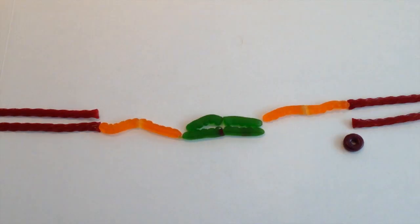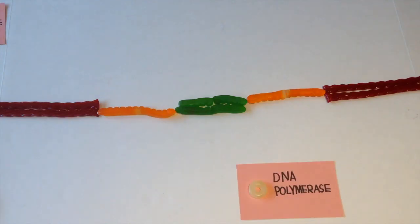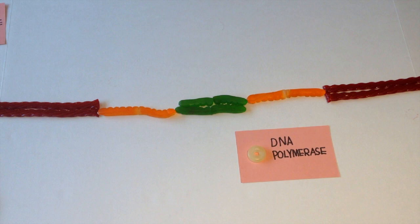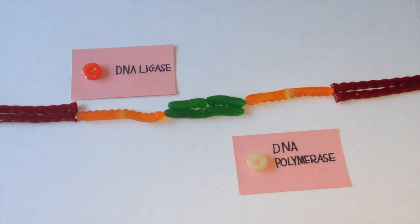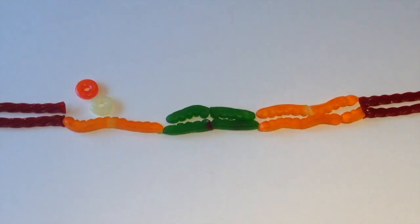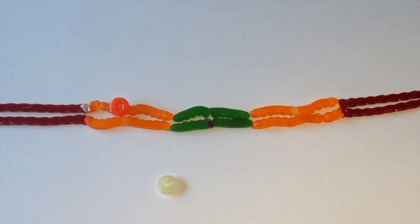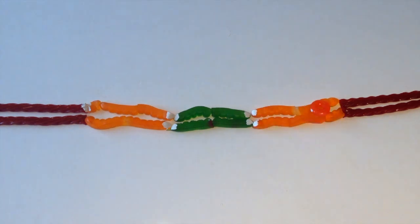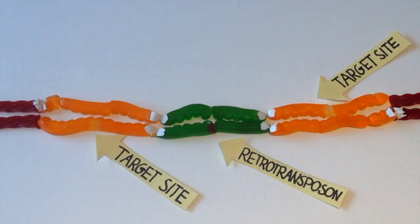The retrotransposon is finally pasted in. The remaining gaps are repaired by replicating the DNA on opposite sides using DNA polymerase. Another enzyme called DNA ligase glues the segments together. And that's how the retrotransposon is copied and pasted into a new region of the genome.